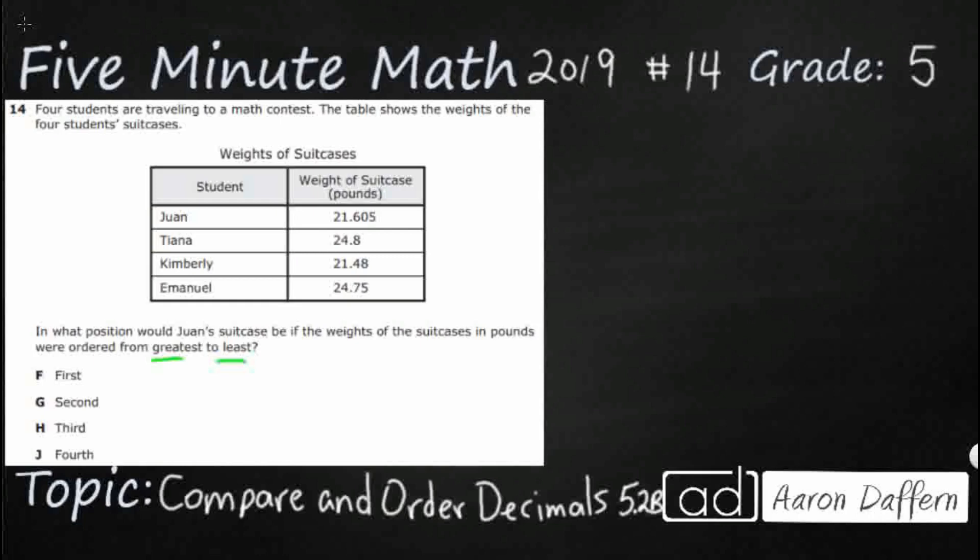So they have given us the numbers all lined up, so we can actually use this table right here to figure out the order from greatest to least. Let's go ahead and write out our place value chart though.